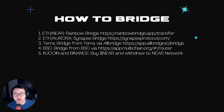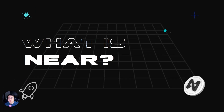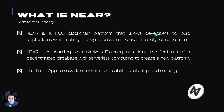All of these links will also be down in the description below. So what is NEAR? NEAR is a proof-of-stake blockchain that allows developers to build applications using their NEAR SDK, while also making it easily accessible and user-friendly for consumers. NEAR uses sharding to maximize efficiency, which is similar to what ETH 2.0 is trying to create. And they are also the first to claim they solve the trilemma of usability, scalability, and security.